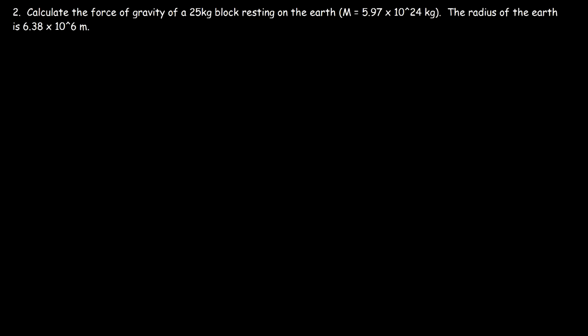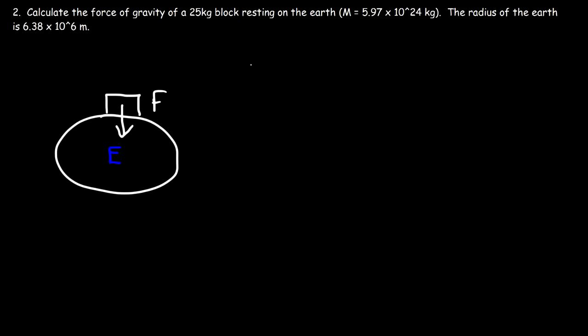Number two. Calculate the force of gravity of a 25 kilogram block resting on the earth. We're given the radius of the earth. So let's say this is the earth and we have a block resting on it. What's the force of gravity exerted on that block, which points towards the center of the earth? To calculate the gravitational force, we can use this equation: G times m1 times m2 over r squared.